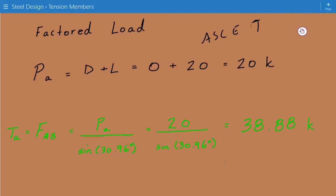When we change, whether we're doing LRFD or ASD, the statics remains the same. So it's 20 kips divided by sine of 30.96 degrees. So our allowable tensile load that we need to design for is 38.88 kips.